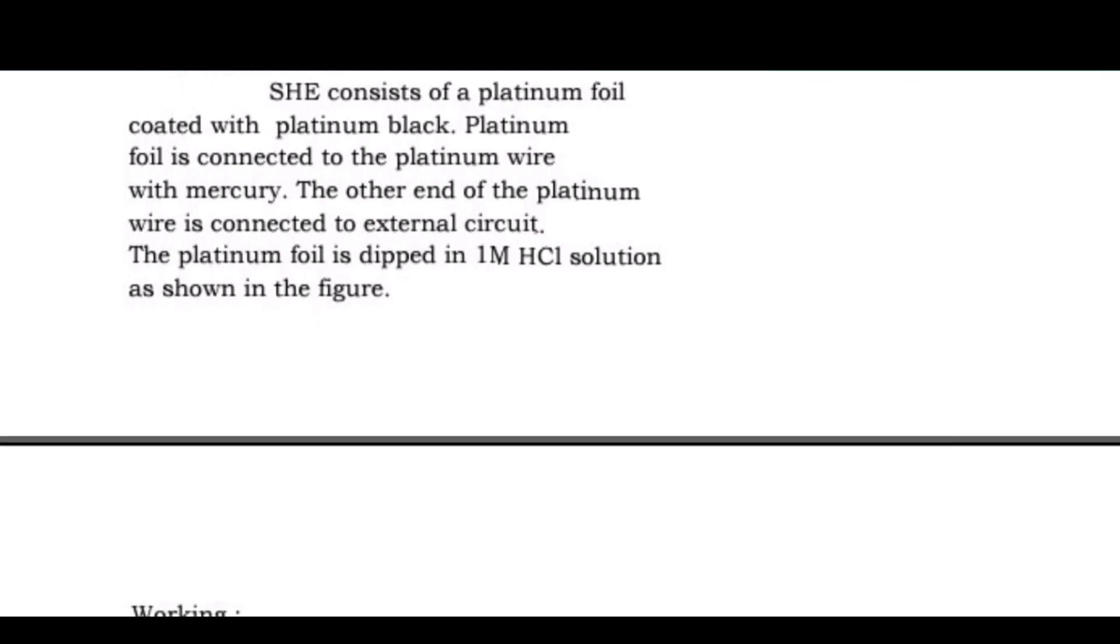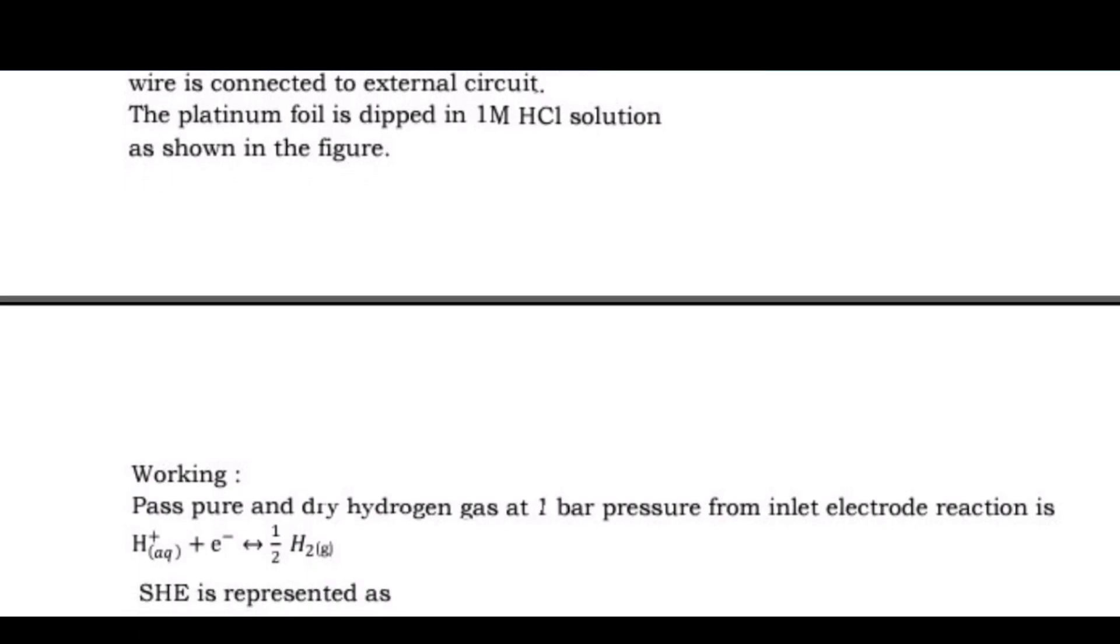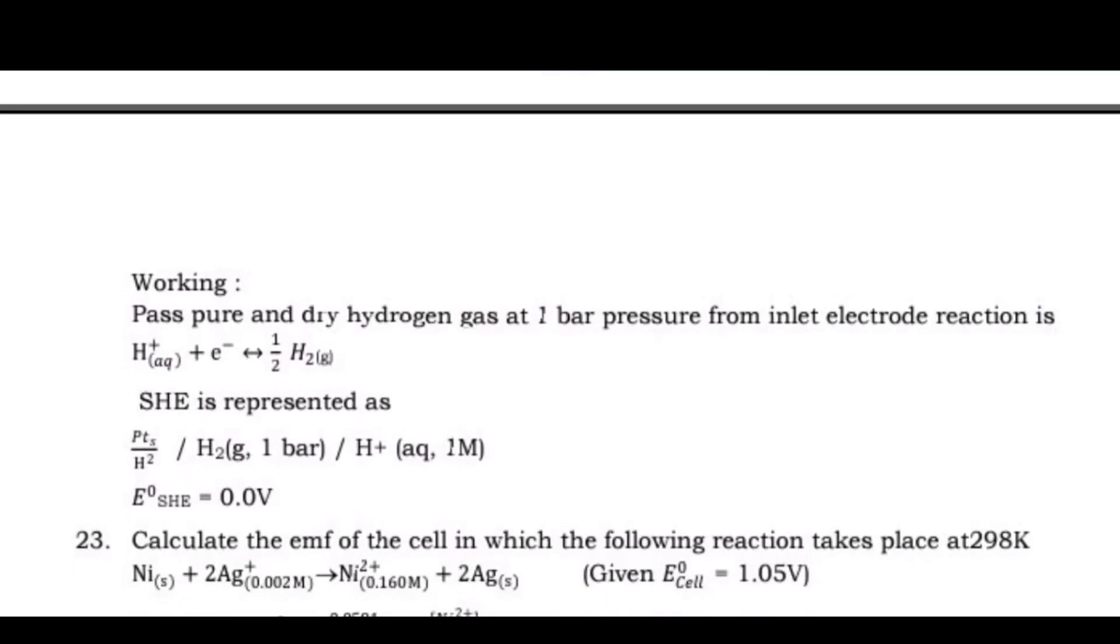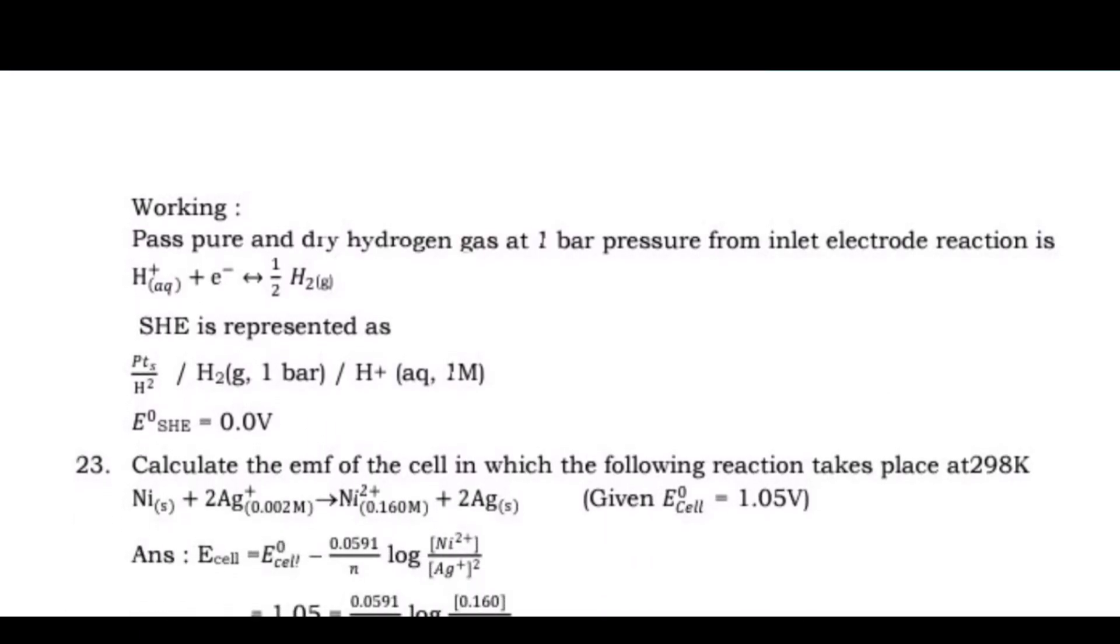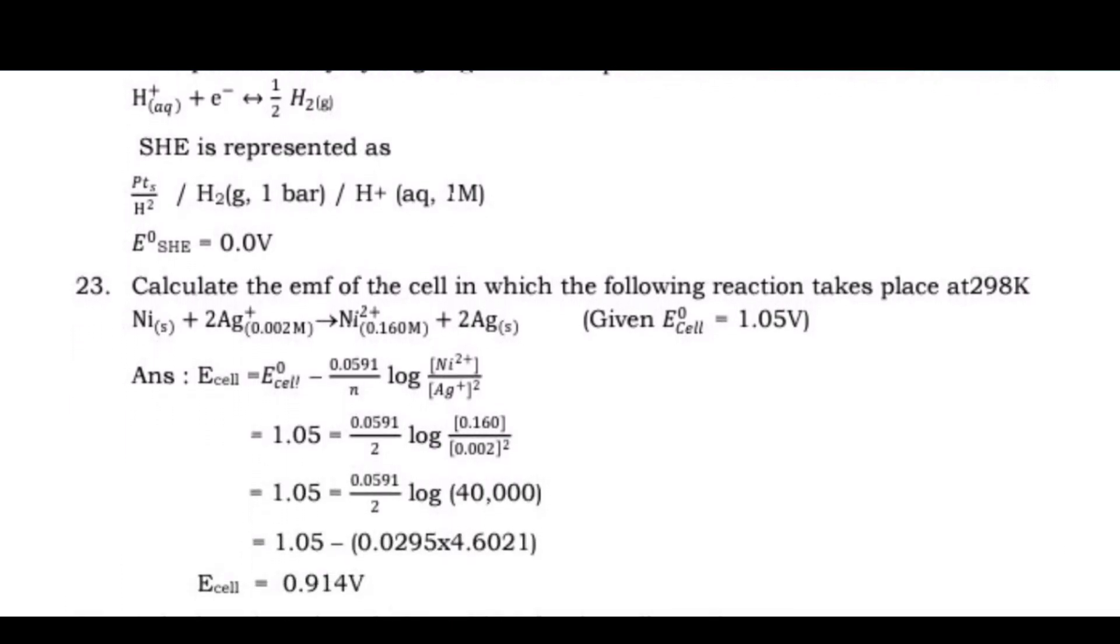Question 23: Calculate the EMF of the cell in which the following reaction takes place at 298K: Ni + 2Ag⁺(0.002M) → Ni²⁺(0.160M) + 2Ag, given E°cell = 1.05 volts.